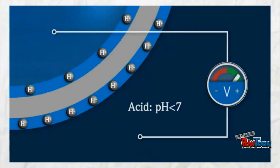If the concentration of hydrogen ions is higher on the outside than the inside, the pH will be lower than 7. Hence, the solution is acidic.